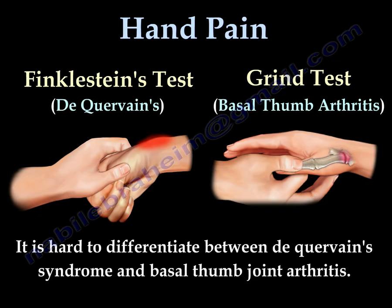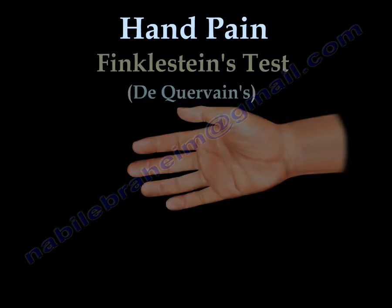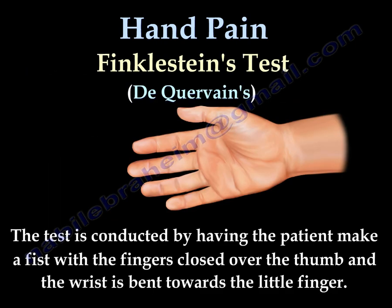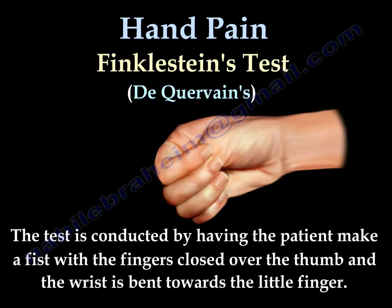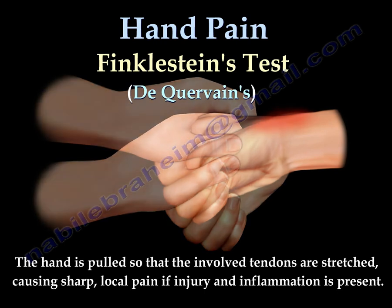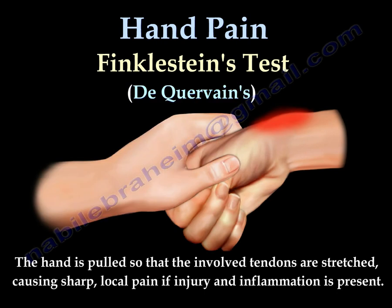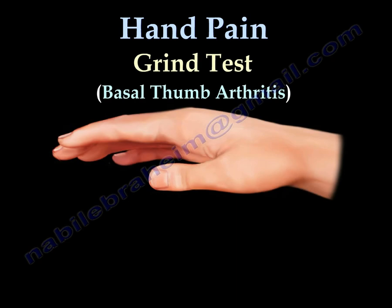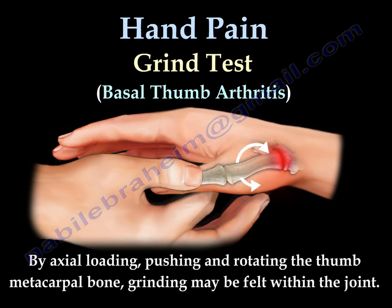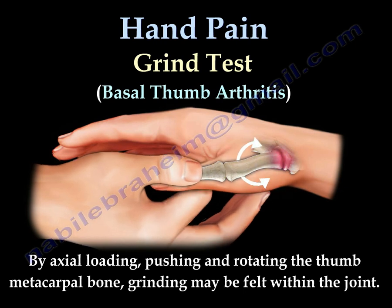There is a difference between De Quervain syndrome and basilar thumb arthritis. The Finkelstein test is used for De Quervain syndrome: the patient makes a fist with fingers closed over the thumb and the wrist is bent towards the little finger. The hand is then pulled so the involved tendons are stretched, causing sharp local pain if inflammation is present. The grind test is used for basilar thumb arthritis by applying axial load and pushing and rotating the thumb metacarpal bone; grinding may be felt within the joint if arthritis is present.